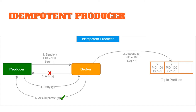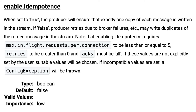To make our producers work in an idempotent fashion, the only thing we have to do is set the producer property `enable.idempotence` to true. As per the official Kafka documentation, when this property is set to true the producer will ensure that exactly one copy of each message is written in the stream. If set to false, producer retries may write duplicates. Note that there are restrictions on other properties as well: max in-flight requests per connection should be less than or equal to 5, retries should be greater than 0, and acknowledgements must be set to all. If these are not set explicitly, suitable values will be configured automatically, and in case of any incompatibility a config exception will be thrown.